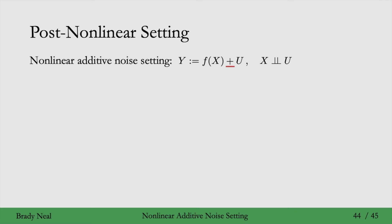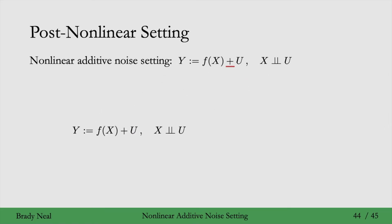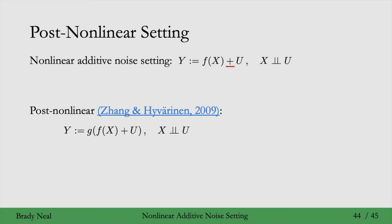But if you don't like assuming additive noise, we can make it a bit more general. Just add another function on the outside. It's post-nonlinear in the sense that this function g comes after we've added the noise u. It's not quite additive noise since we also have this outer function g applied to both. In this post-nonlinear setting with function g and function f, you can get an identifiability result there as well.